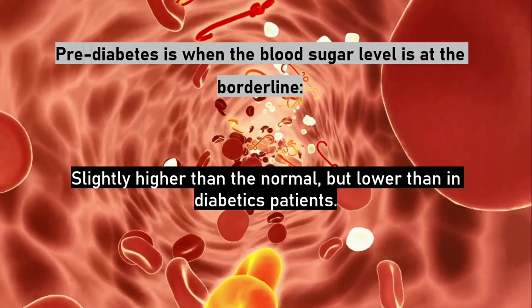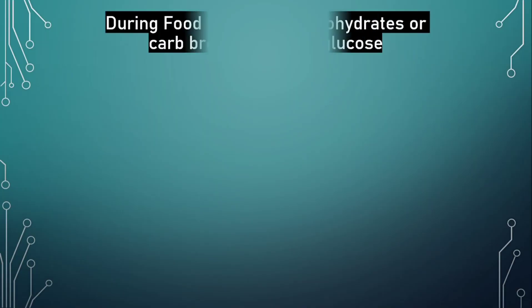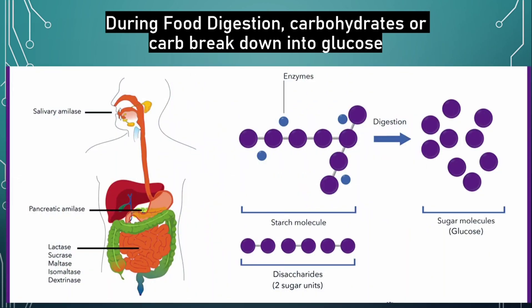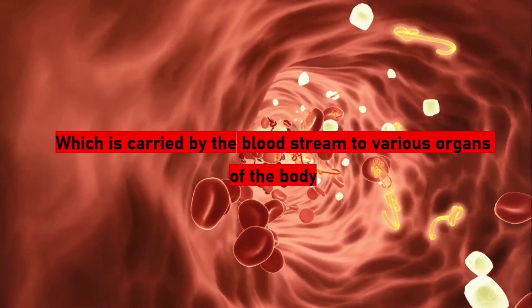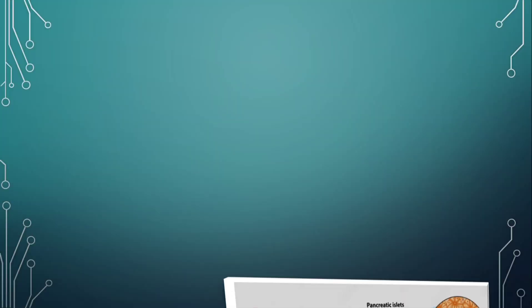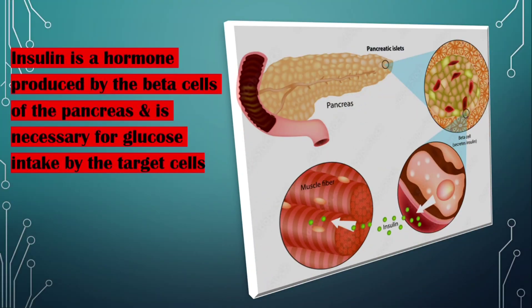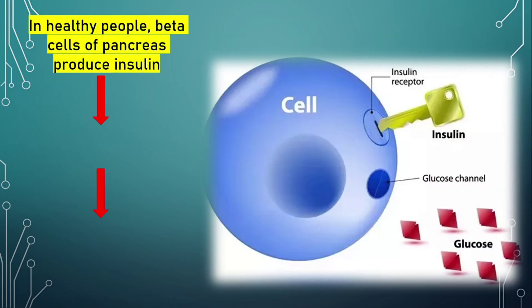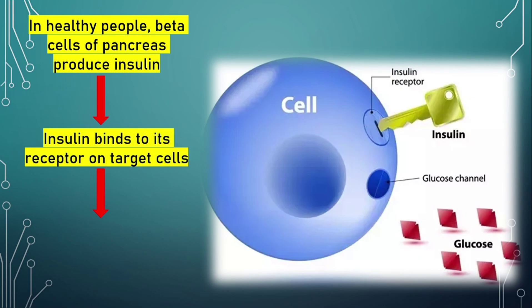During food digestion, carbohydrates break down into glucose, which is carried by the bloodstream to various organs of the body. Insulin is a hormone produced by beta cells of the pancreas and is necessary for glucose intake by target cells. In healthy people, beta cells of the pancreas produce insulin.